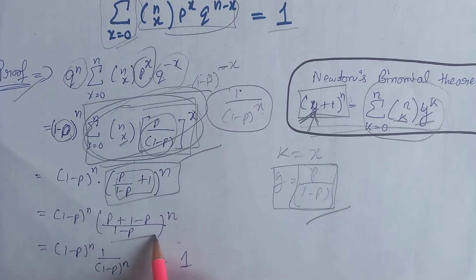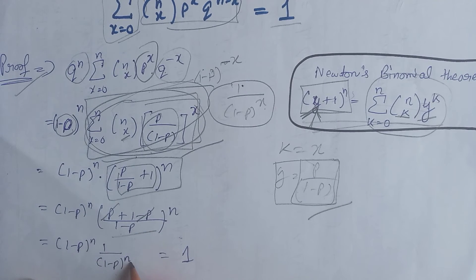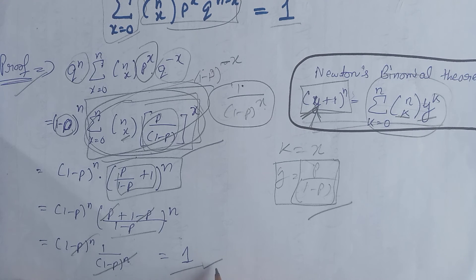Now, we take LCM of these two terms like this. On canceling here, we are left with 1 divided by 1 minus p raised to power n and on canceling, we get only 1. That is we have proved that the summation of the PMF of binomial distribution is equal to 1.